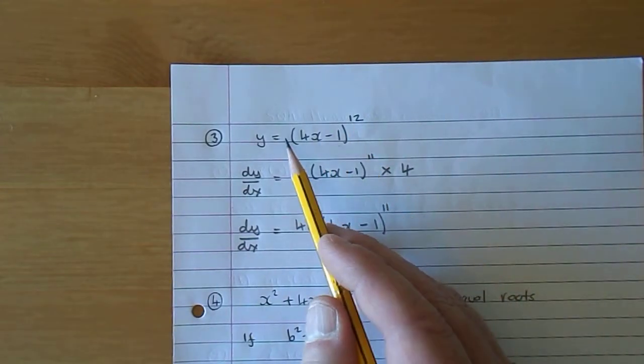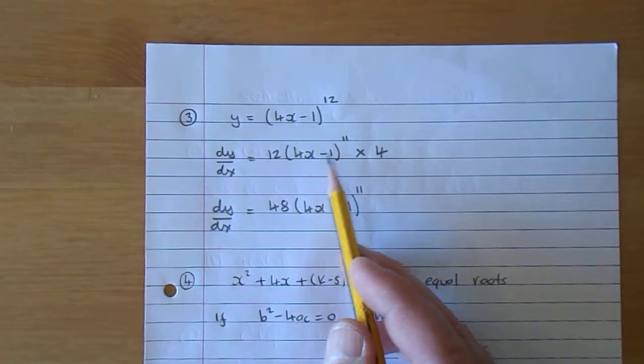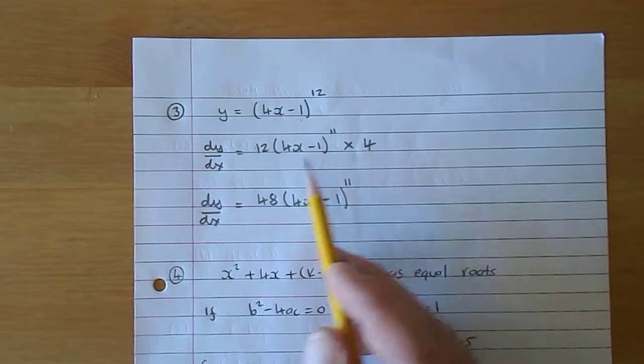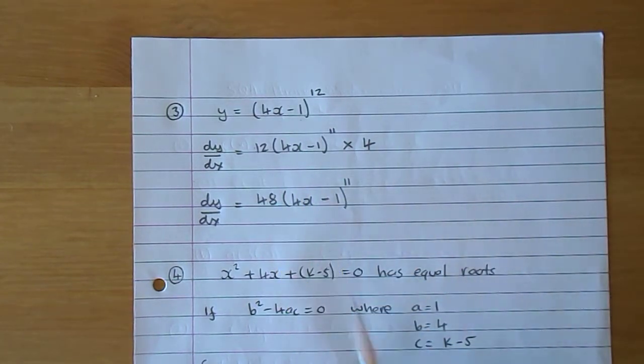So we'll just recap: 12 times the bracket to the power of 11, times it by differentiate 4x - 1, which is 4. 4 twelves are 48, and there we have dy by dx.